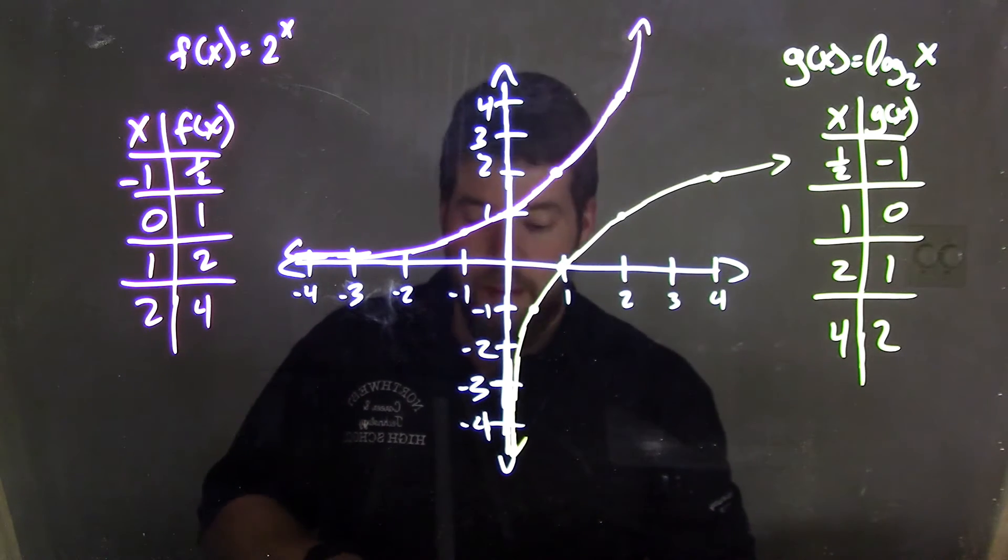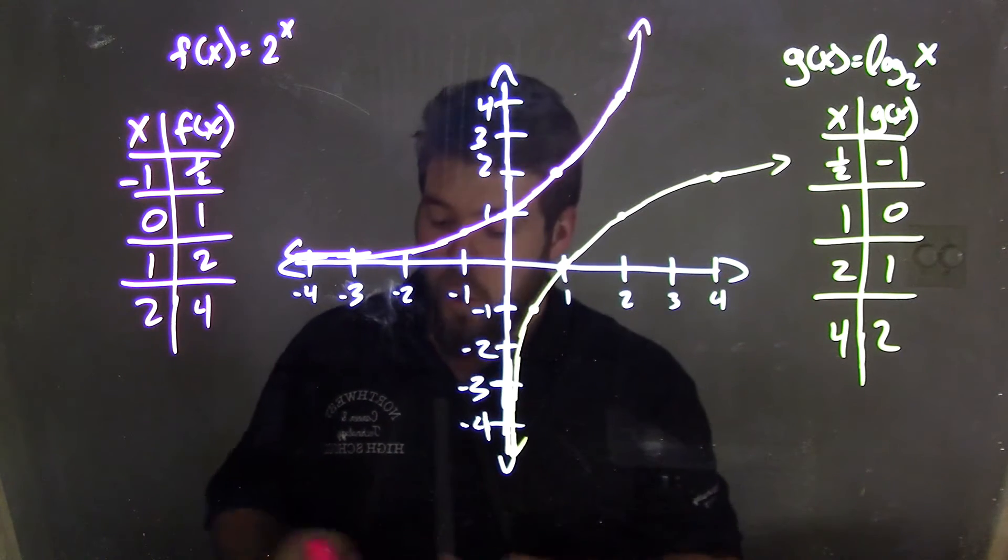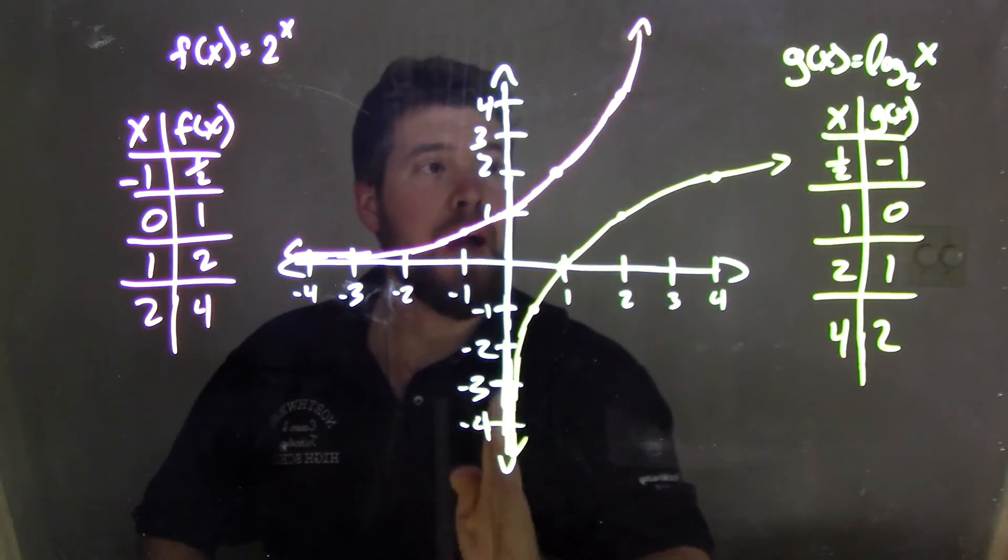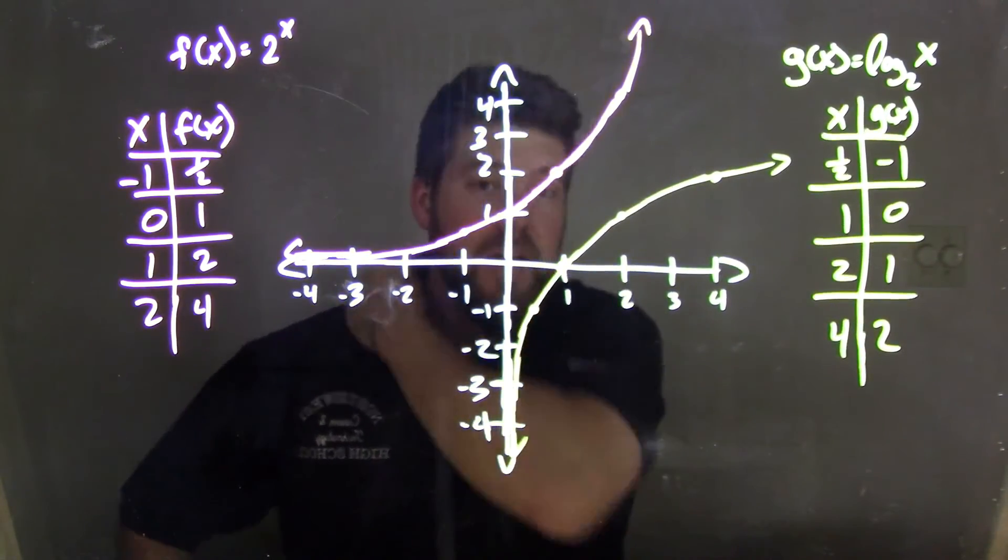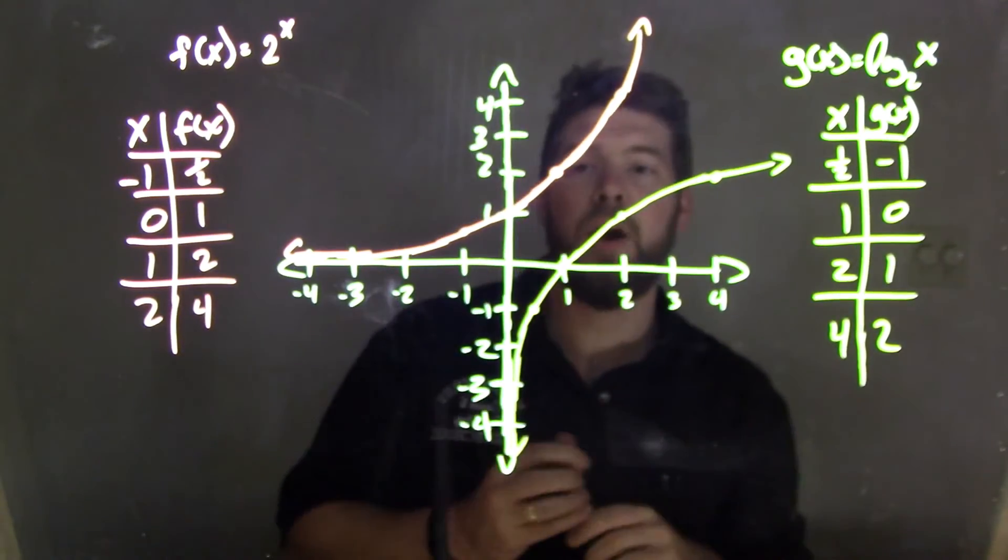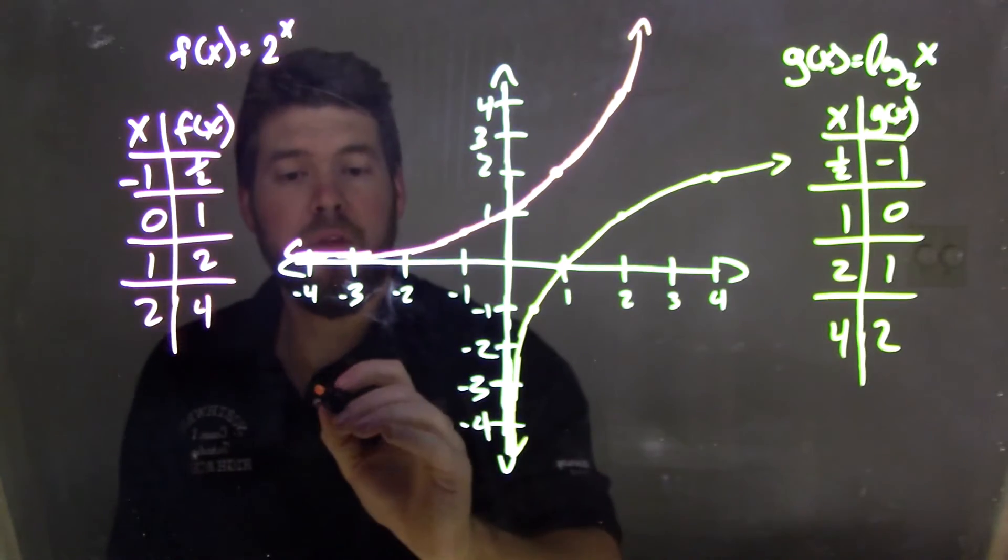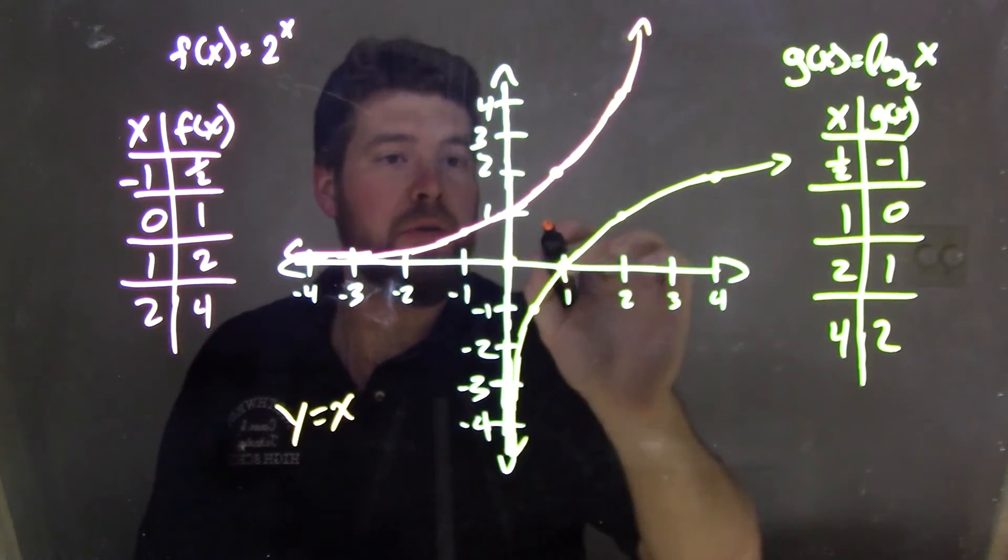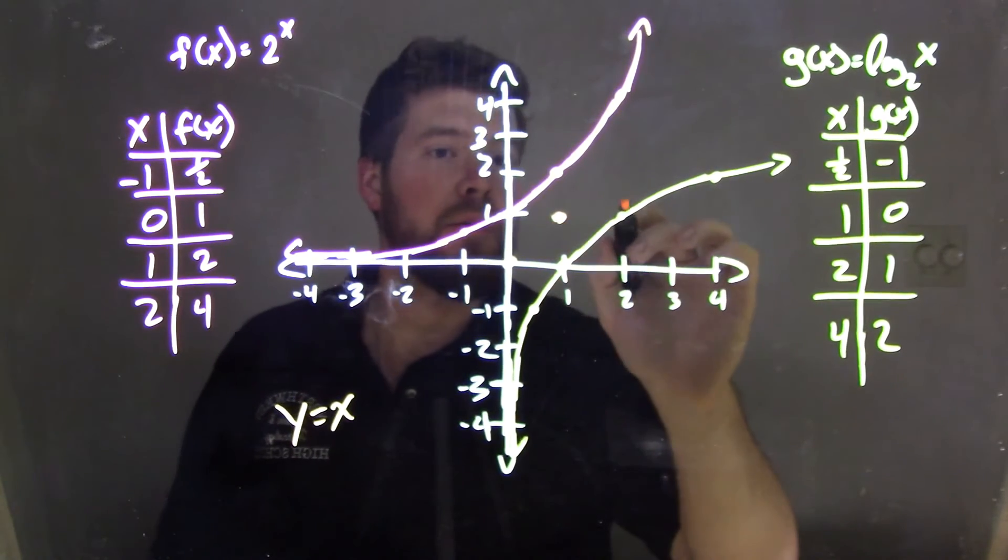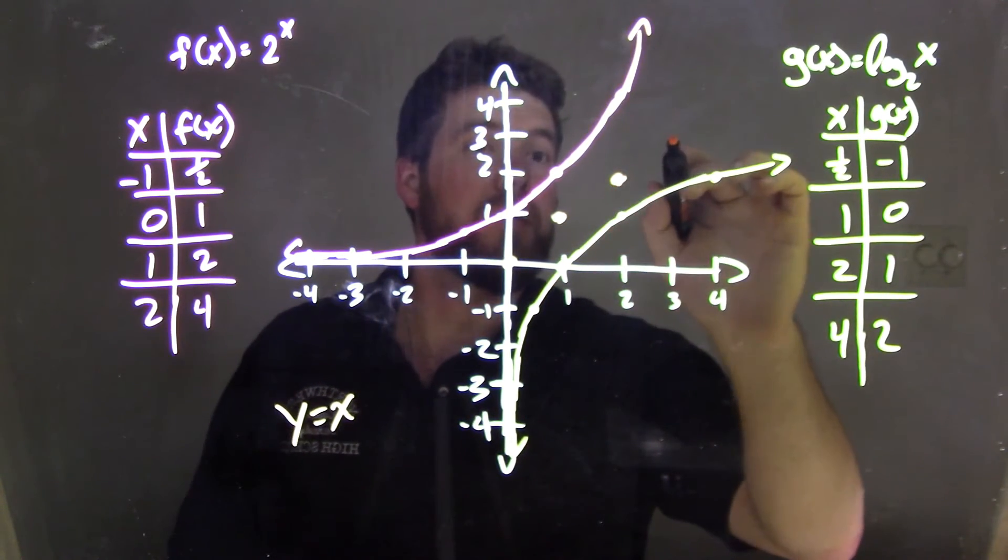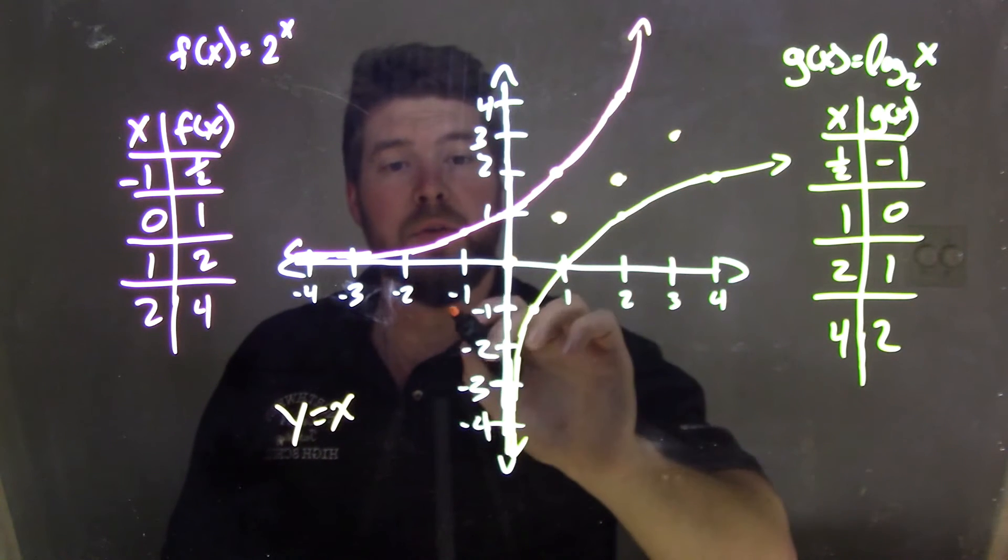if you remember from before, we have a horizontal asymptote for f(x) right here. And we have a vertical asymptote for g(x) right here. Now, these two functions are inverses of each other, meaning they are reflected over the line y = x. So y = x right here. I graph it to the best of my abilities. Let me see.